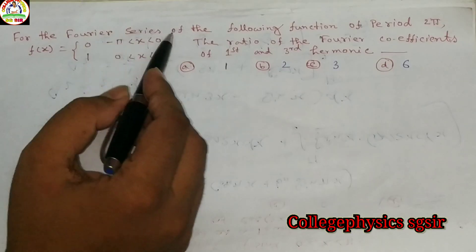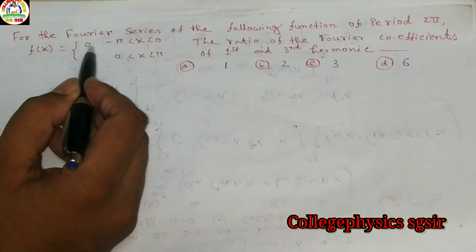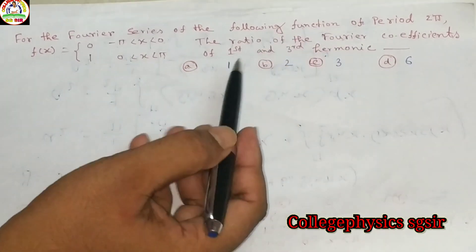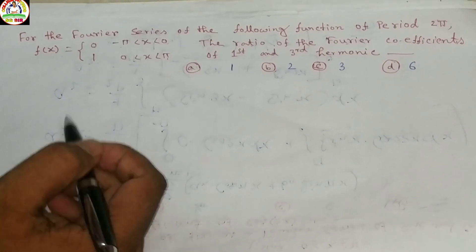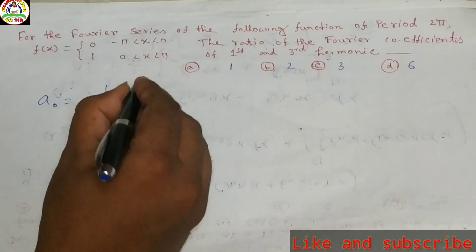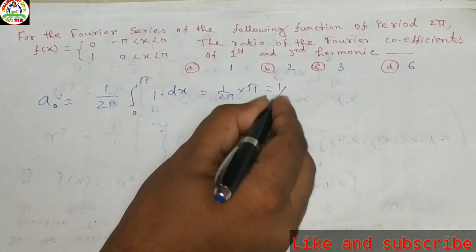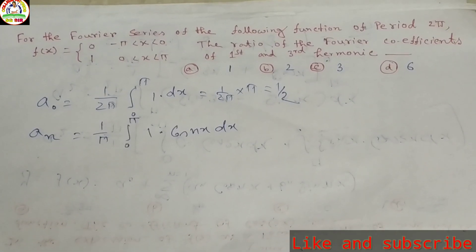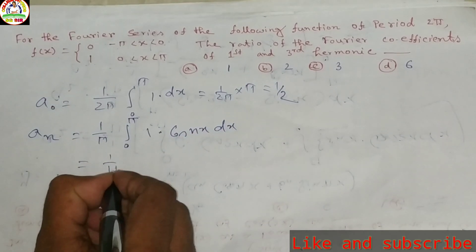Next problem: For the Fourier series of f(x) with period 2π, where f(x) = 0 for −π to 0 and f(x) = 1 for 0 to π, the ratio of the Fourier coefficients of the first and third harmonics is — options: 1, 2, 3, or 6. First we calculate: a₀ = (1/2π) ∫₀π 1 dx = 1/2. Then aₙ = (1/π) ∫₀π cos(nx) dx = (1/π)[sin(nx)/n]₀π = 0.